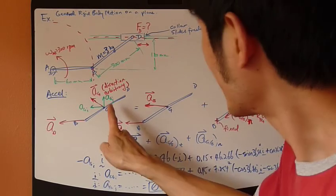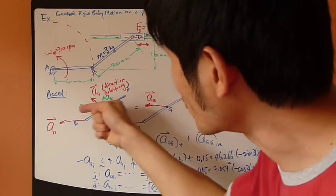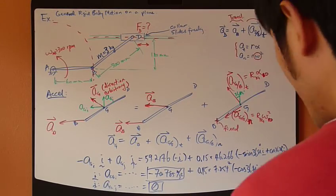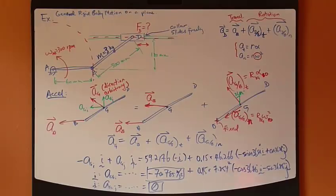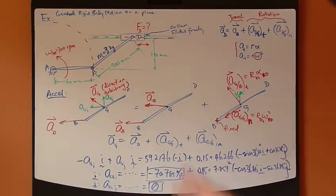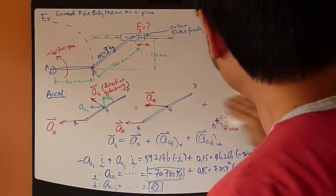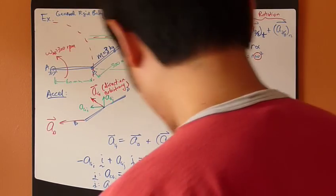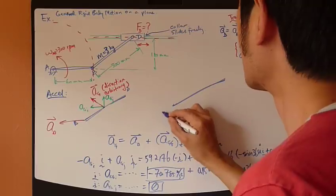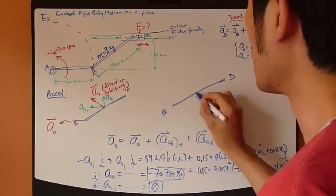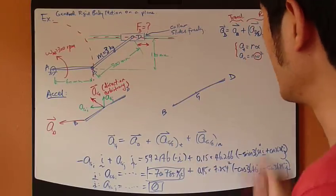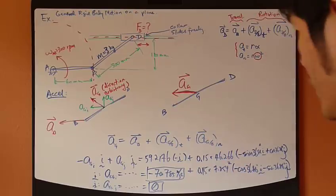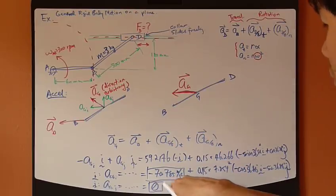Which means, this A_G vector is straight left in the I direction. So, now we can actually update our picture. I can actually redraw this whole thing. So, B, G, and D, so the acceleration of G actually goes straight to the left, my A_G, 70.75 meter per second squared.